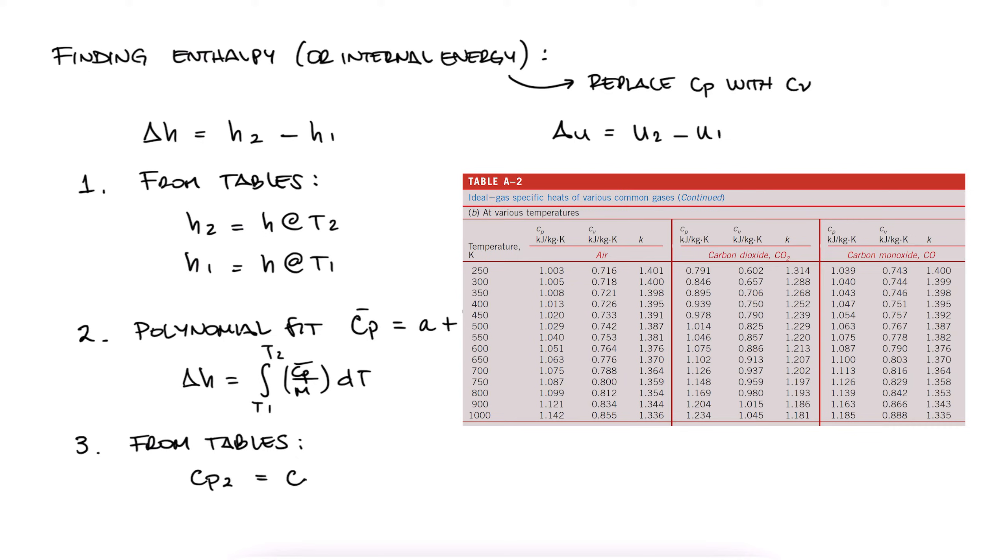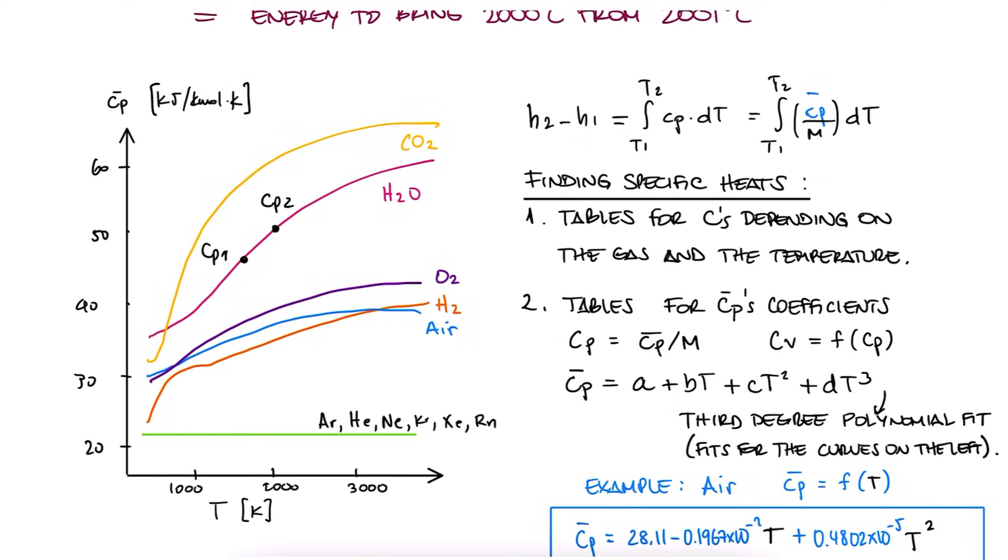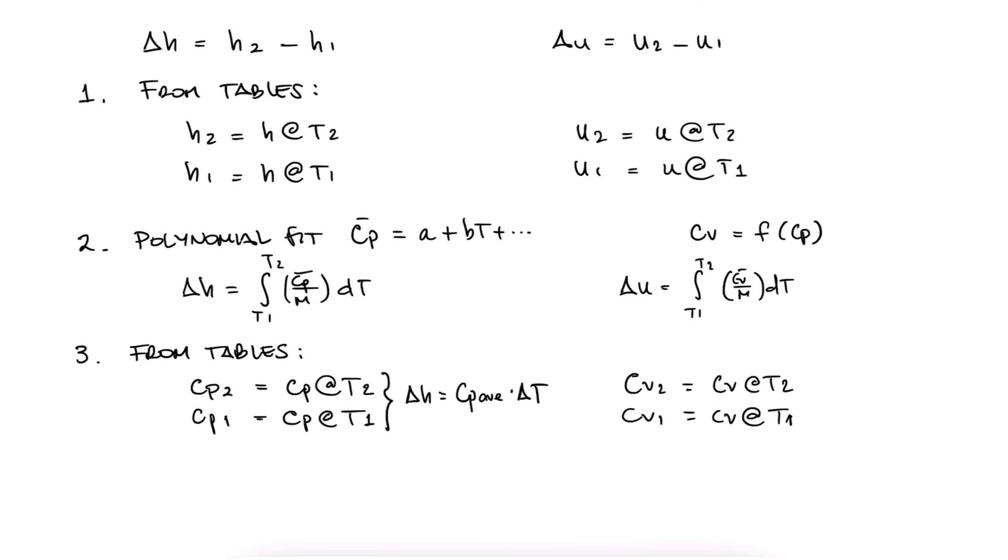Three, look at a table that gives us Cp for those temperatures, and assume that the change is small enough for it to be linear, so that we can take an average and multiply it by the change in temperature.